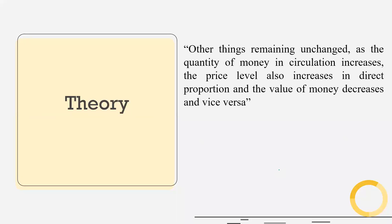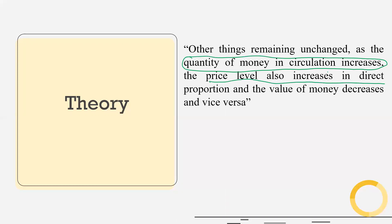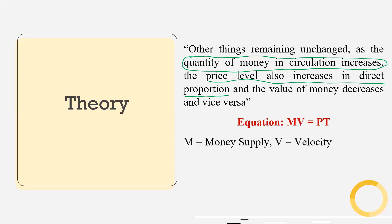Now, what is the theory? The theory says that other things remaining unchanged, as the quantity of money in circulation increases, the price level also increases in a direct and proportional manner. The equation is MV = PT. Here, M is money supply, V is velocity, P is general price level, and T is transaction.